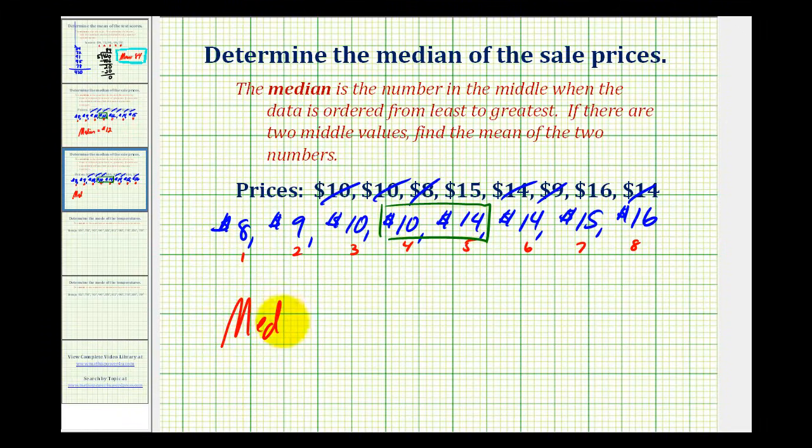So in this case, the median will be equal to ten dollars plus fourteen dollars divided by two. Well, ten plus fourteen is twenty-four divided by two would be twelve, or in this case, twelve dollars.